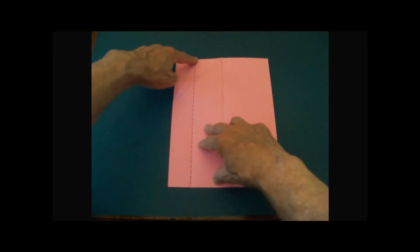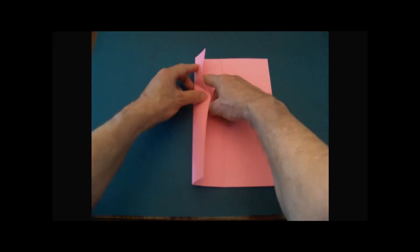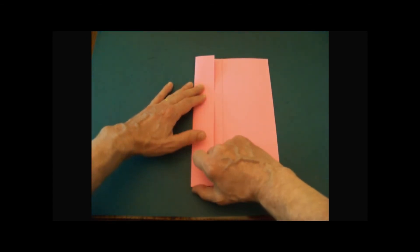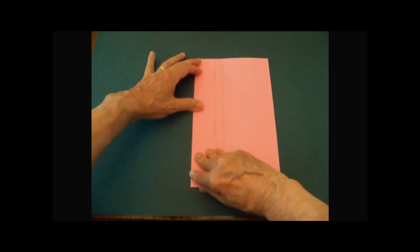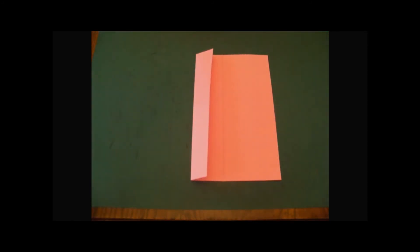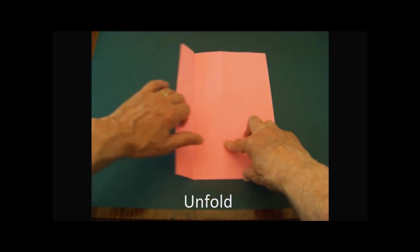The crease where the last fold meets the paper will be used as a guide to make the next fold. Make a crease that is parallel to a line formed by the center crease. Align the top and bottom edges carefully. Unfold the paper completely.